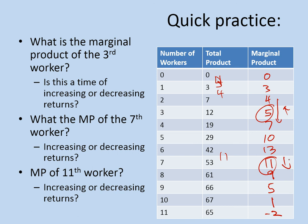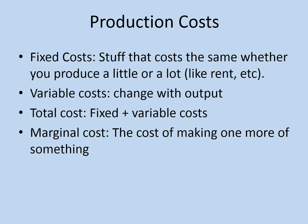The marginal product of the 11th worker — well, this last worker actually made things worse. It didn't add any marginal product; in fact, it took two away.